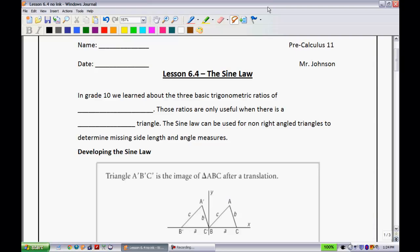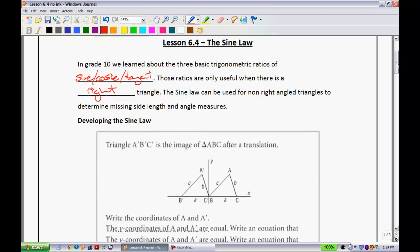This is lesson 6.4, the sine law. In grade 10, we learned about three basic trigonometric ratios of sine, cosine, and tangent. These ratios, though, were only useful when there was a right-angled triangle. So what's going to be beneficial about the sine law is that we can use it for non-right-angle triangles whenever we're looking for side lengths or angle measures.